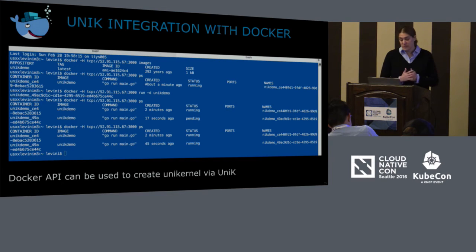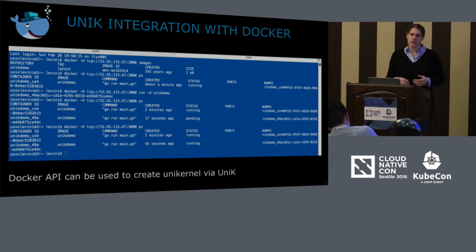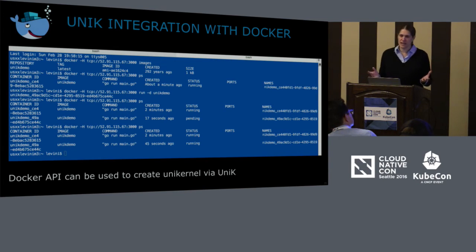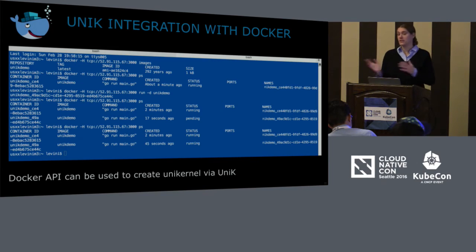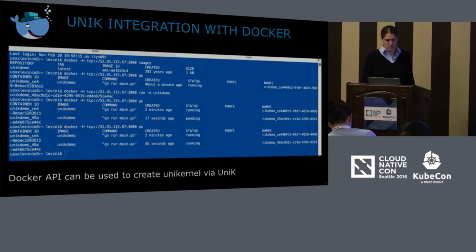We also understood that everybody really liked the Docker API and already had scripts running with it. We didn't want you to learn a new API. So we taught Unik how to speak the Docker API. There is a limitation — you won't be able to build with the Docker API because Unik needs to know where it's running, and it's not infrastructure-independent like Docker. But you will be able to use run, ps, and so on.